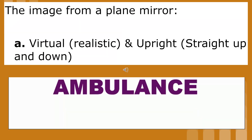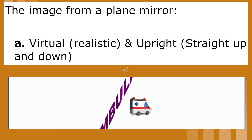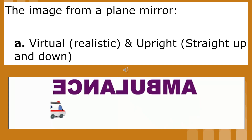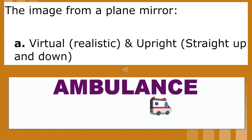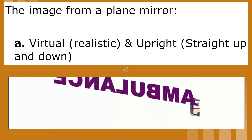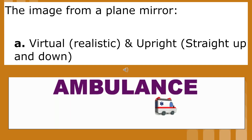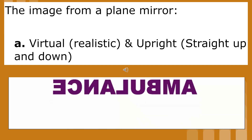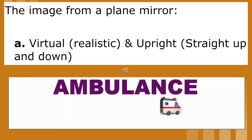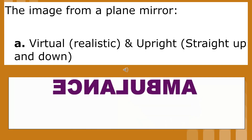The image from a plane mirror is virtual and upright. Virtual means realistic, and upright means straight up and down. The reason why we say the image produced by a plane mirror is virtual and not real can be illustrated by looking in the mirror while wearing a shirt that has words on it. When we do this, we see that the words on our shirt are reversed from left to right. You may have seen that the words on an ambulance are sometimes reversed so that they can be seen correctly in a rear view mirror.